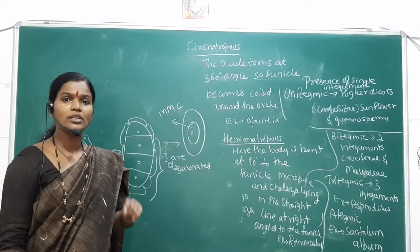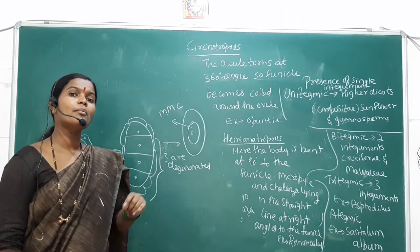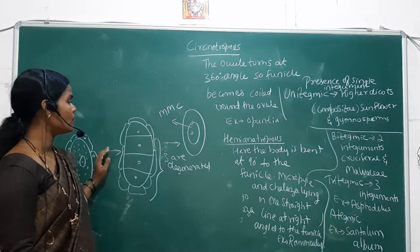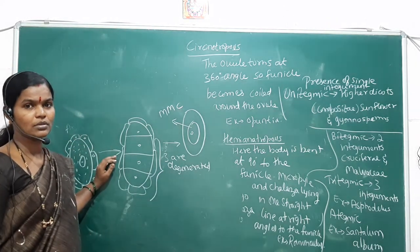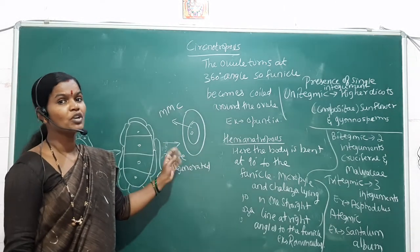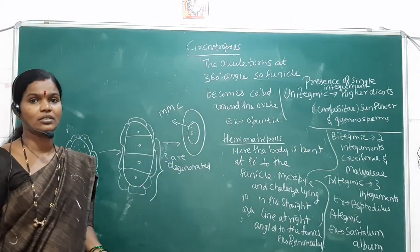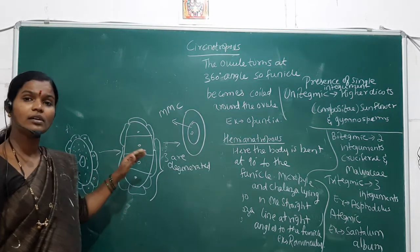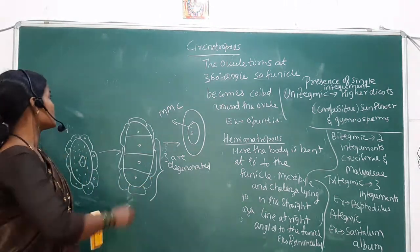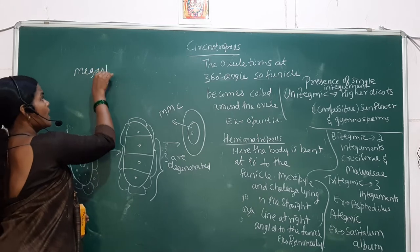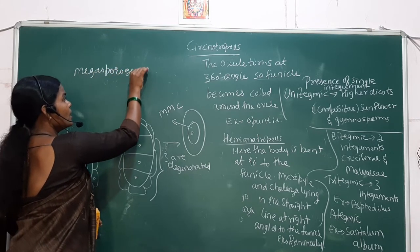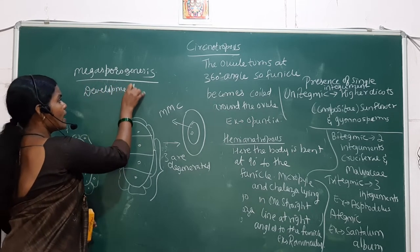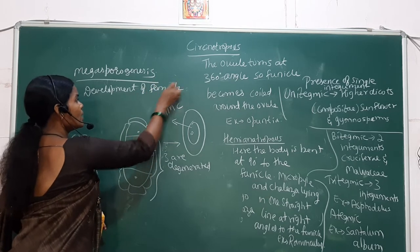Once again: megasporogenesis is the process of formation of the megaspore from the megaspore mother cell. Until the formation of the single megaspore mother cell, the process is called megasporogenesis. Megasporogenesis is also called the development of the female gametophyte. From the single megaspore mother cell onward, the process becomes megagametogenesis.